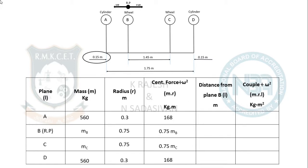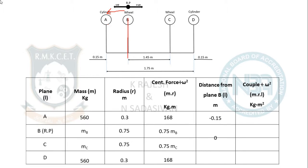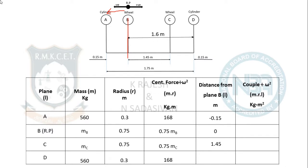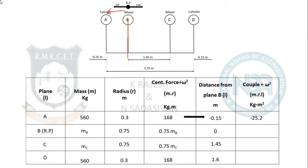Distance from reference plane B: A is −0.15 (left of reference, hence negative), giving moment −25.2. B is 0 (reference plane). C is +1.45, giving 1.09 MC (approximately). D is +1.60, giving 268.8. Multiply each mr value by its distance to fill the couple column.